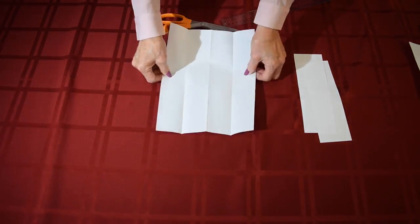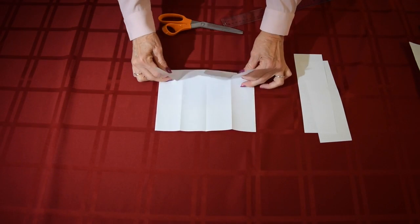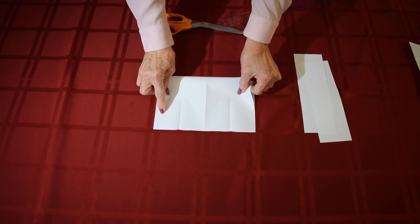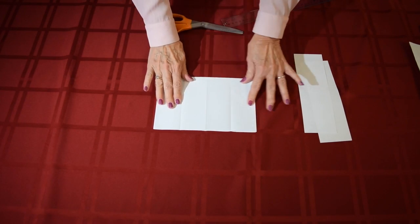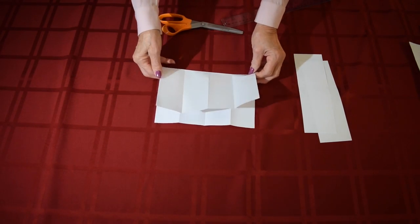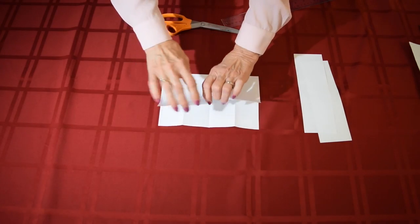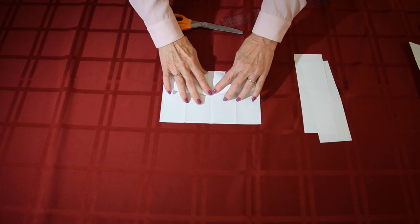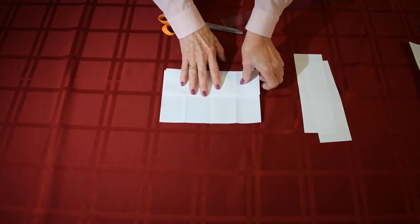Then we are going to open it up and do a hamburger fold which is the fatter side of the paper or the longer side, and we will do the backward fan fold as well on both sides.